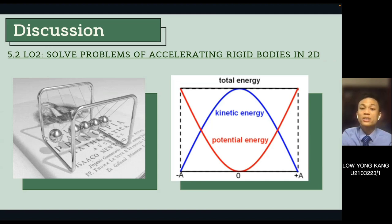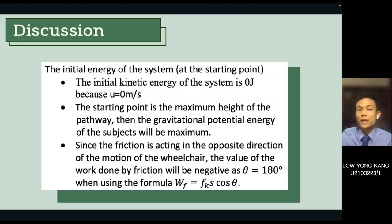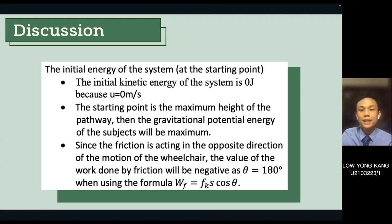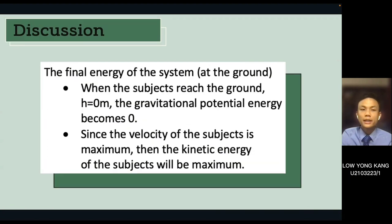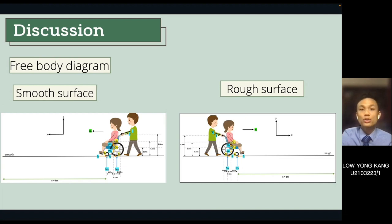The total energy graph includes kinetic and potential energy ranging from negative to positive amplitude. At the starting point, the initial kinetic energy is zero joules because initial velocity is zero, and since it is at maximum height, gravitational potential energy is maximum. Friction acts opposite to motion, so work done by friction is negative. At the ground, gravitational potential energy becomes zero and kinetic energy is maximum. The acceleration and normal reaction forces on all four wheels are then calculated for both smooth and rough surfaces.